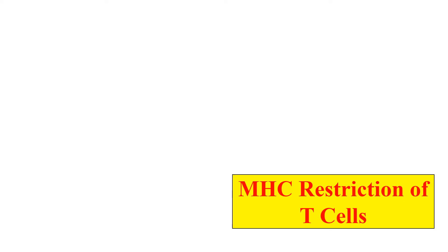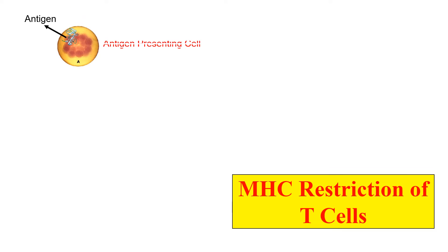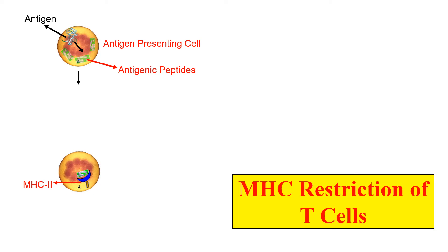Now, with this animation, let's discuss what exactly MHC restriction is. Suppose this is an antigenic protein. First, an antigen presenting cell engulfs this protein and breaks it down into small antigenic peptides. These peptides act as antigens. Then in the next step, these small polypeptides bind to the Class 2 MHC molecules. After binding to the Class 2 MHC molecule, they are displayed on the surface of the antigen presenting cell, where they can be recognized by T-cells — but only when the antigen is in complex with the MHC molecule.